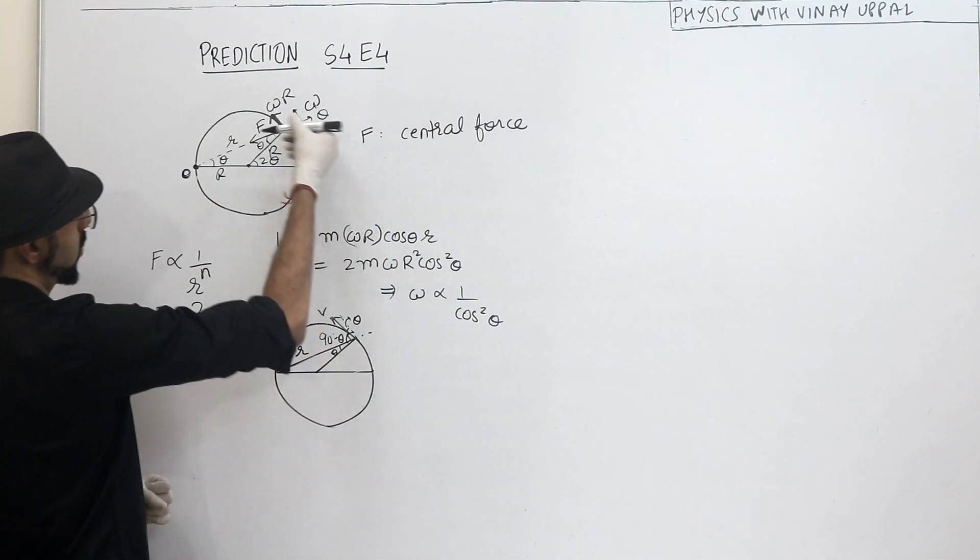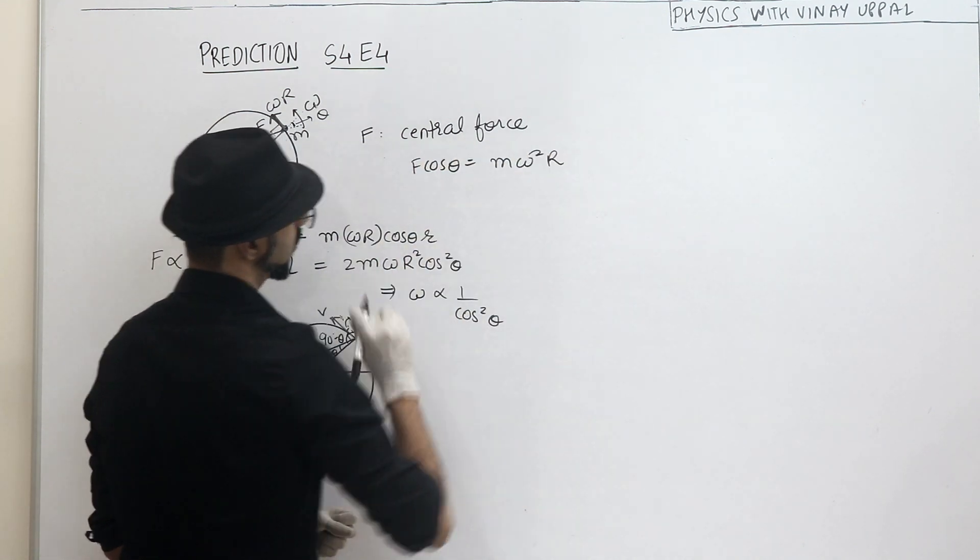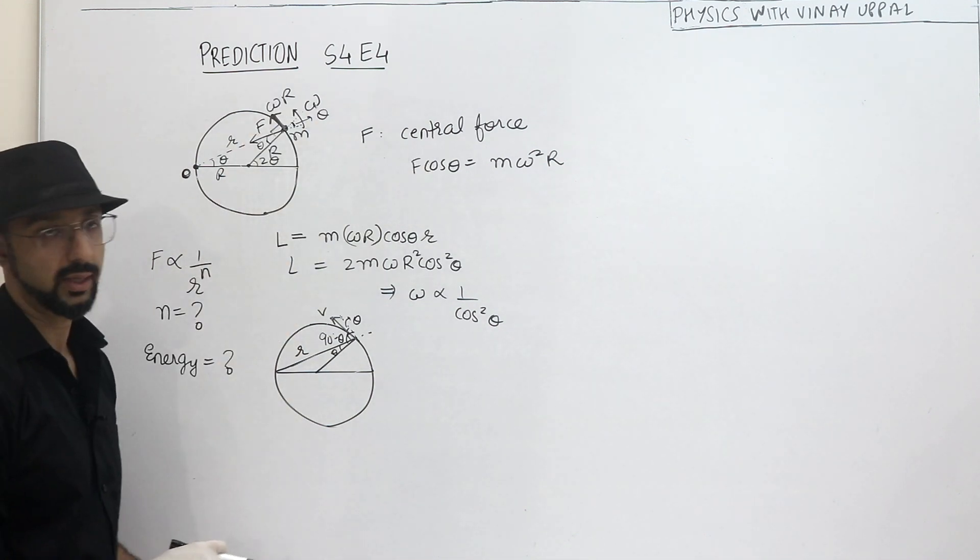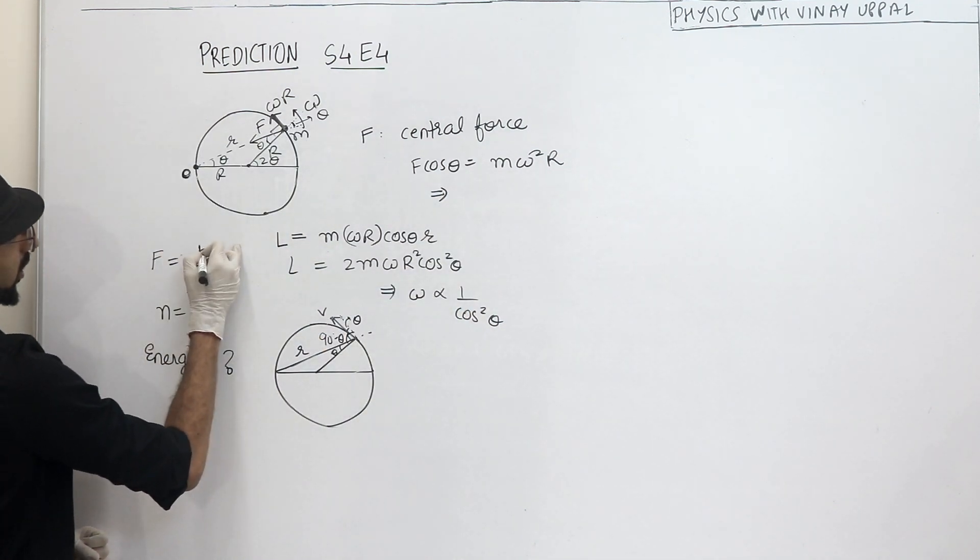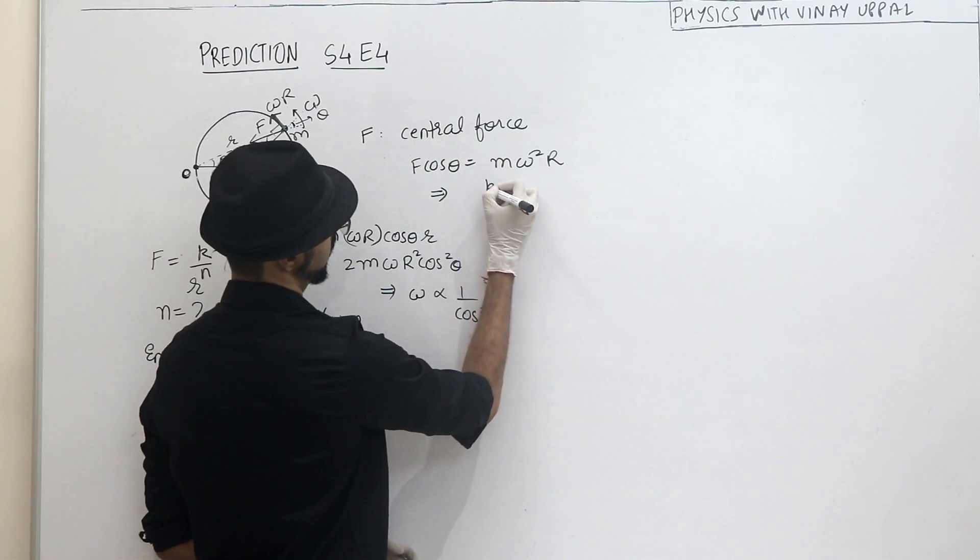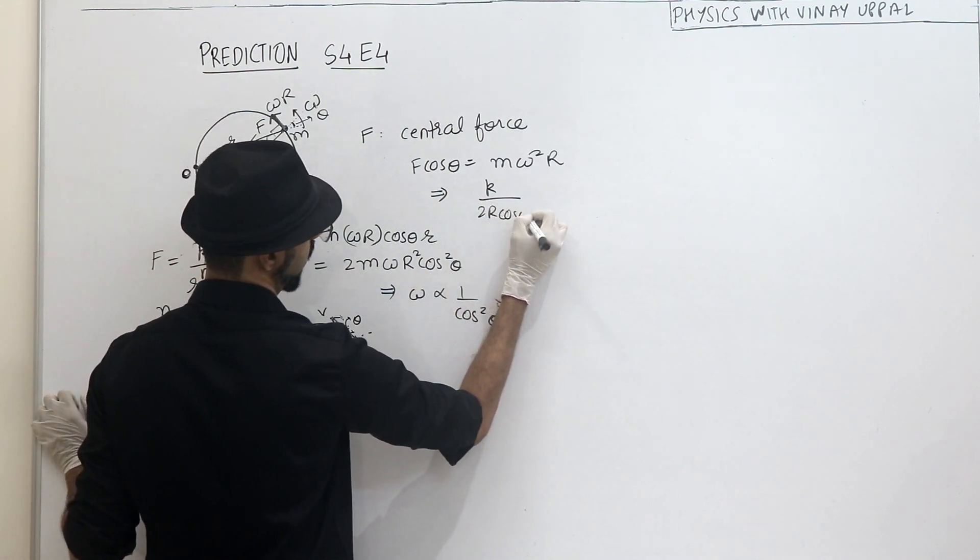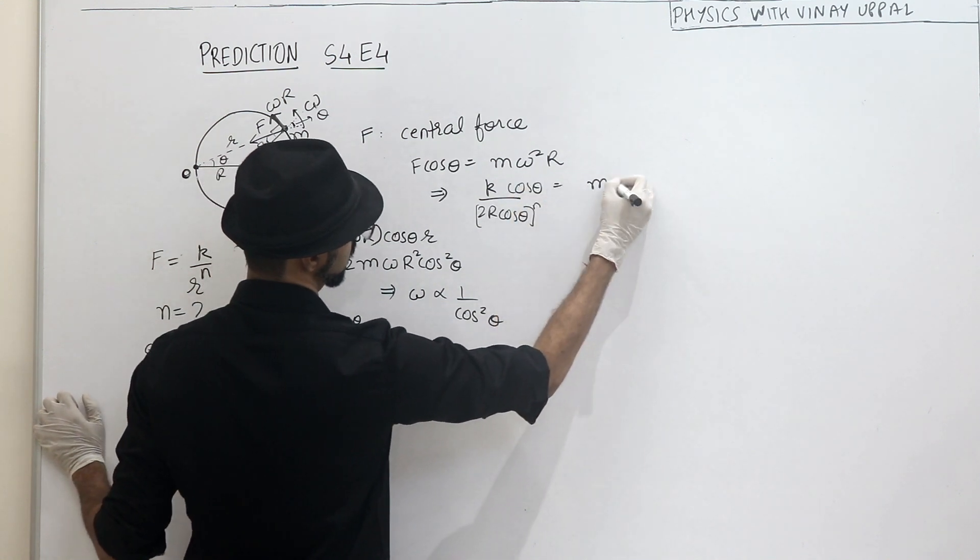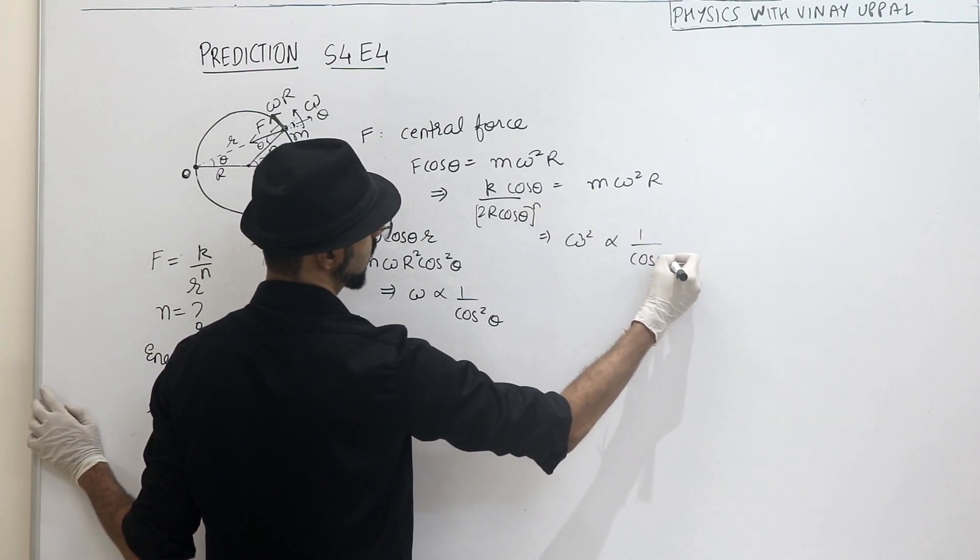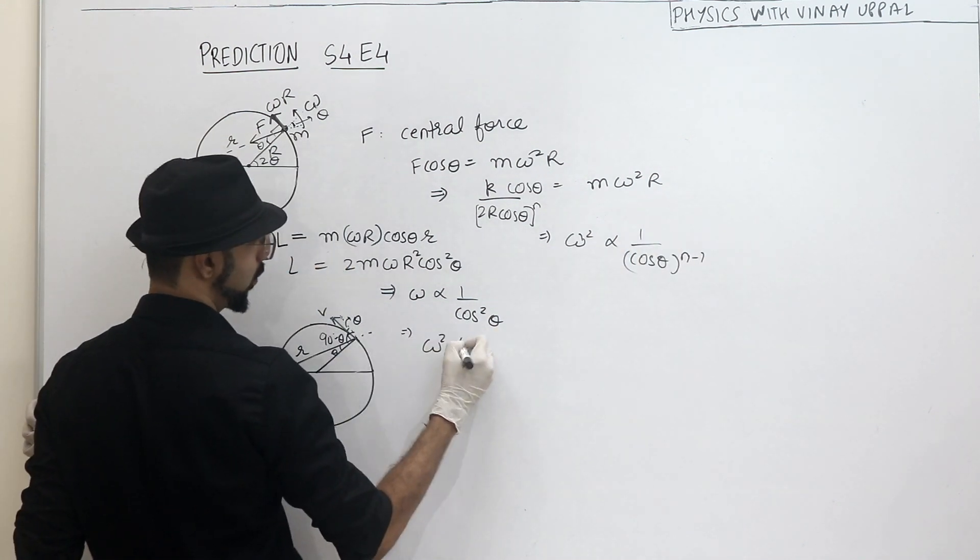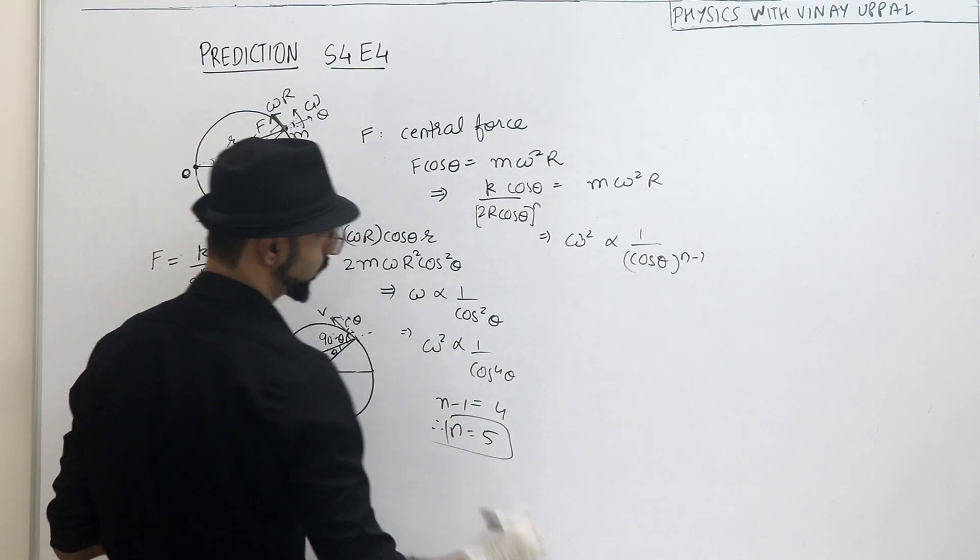Now let me write a force equation. So this force, the centripetal component towards the center, how much is it? F cos theta should be m omega square r. Correct? And f, what can I write about f? f is proportional to 1 by r raise to n. So let's say f is equal to some constant divided by r raise to n. So some constant divided by r raise to n, where r itself is 2r cos theta. So we have 2r cos theta raised to n. Here we have omega square proportional to r. Omega square, I am getting proportional to cos theta raised to n minus 1. n minus 1 is equal to 4.